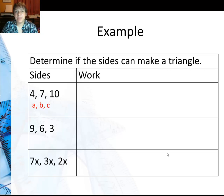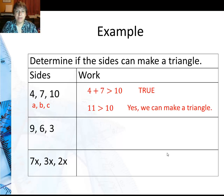So c would be 10, that's the longest side. 4 plus 7 should be greater than 10. 11 is greater than 10, which is true. So I can make a triangle with sides 4, 7, and 10.